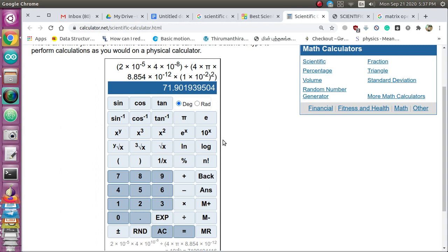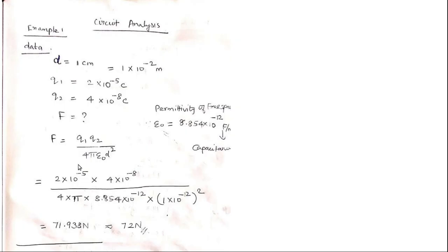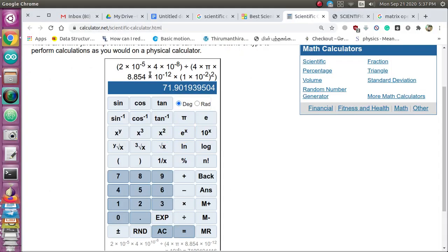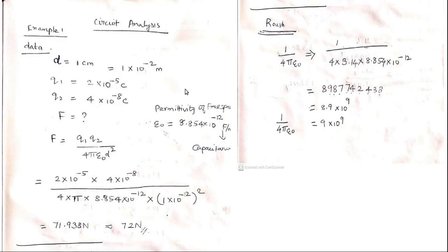Now I am closing the bracket. You have got the answer 71.901. I had written 71.938 because I substituted a slightly different value for 1 by 4πε₀ — I will explain that. So you have got almost the same answer: 71.90 here and 71.938 there.